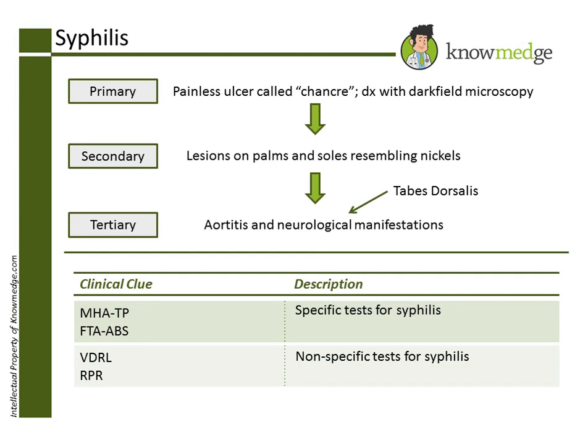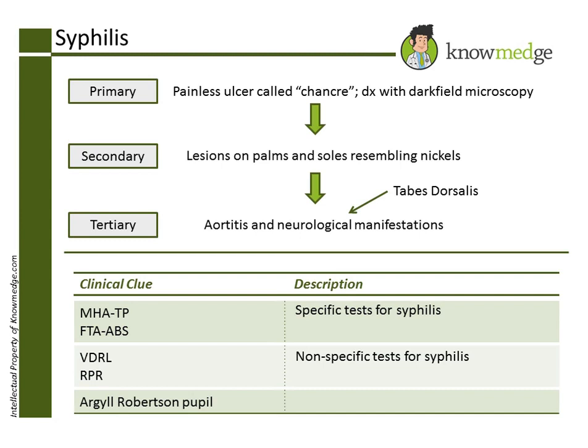The Argyll-Robertson pupil is one that is able to constrict to accommodation but not to light. Choice C is saying that the pupil is able to constrict to light in tertiary syphilis, which is an incorrect answer.